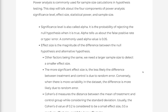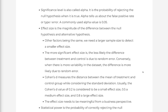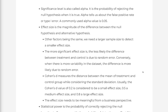Significance level is also called alpha. It is the probability of rejecting the null hypothesis when it is true. Alpha tells us about the false positive rate, or type 1 error. The commonly used alpha value is 0.05.